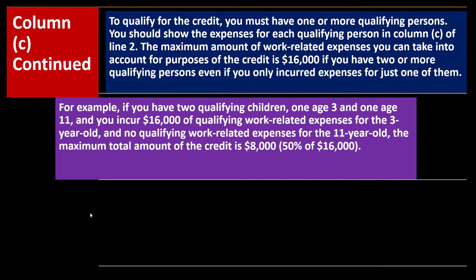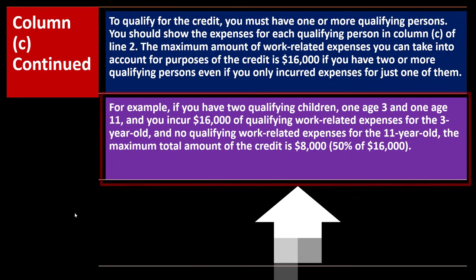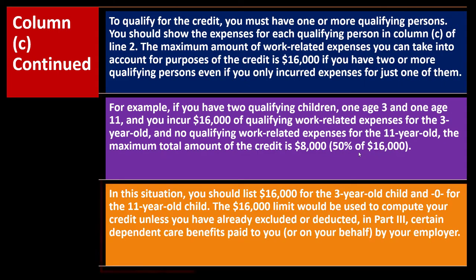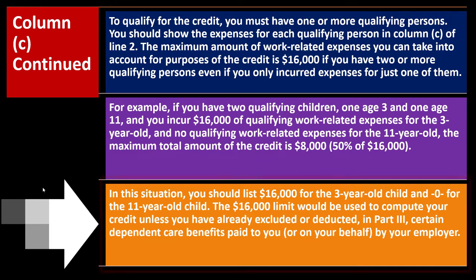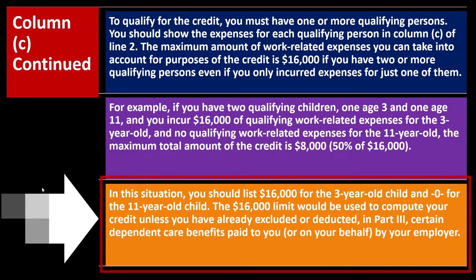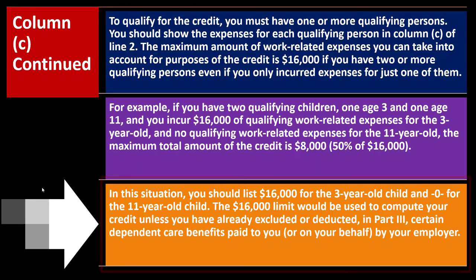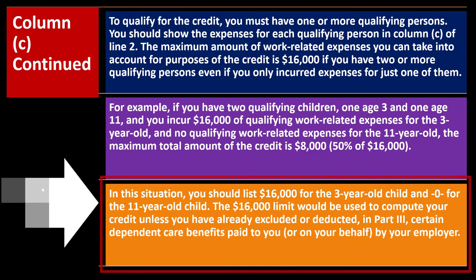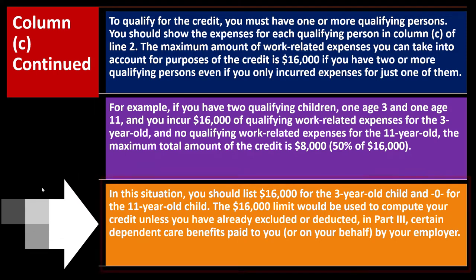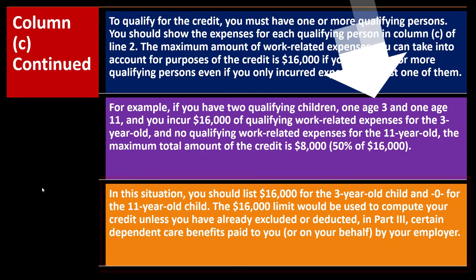For example, if you have two qualifying children — one age 3 and one age 11 — and incurred $16,000 in qualifying expenses for the 3-year-old and none for the 11-year-old, the maximum credit is $8,000, which is 50% of $16,000. List $16,000 for the 3-year-old and zero for the 11-year-old. The $16,000 limit is used to compute your credit unless you've excluded or deducted certain dependent care benefits from your employer in Part 3.